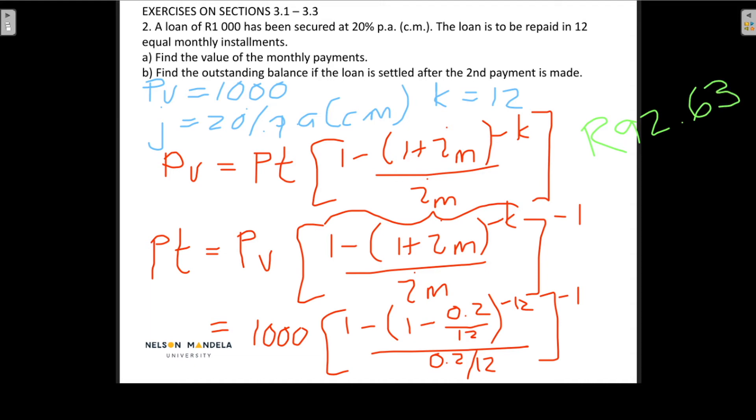So now we can look at the B part where we want to find the outstanding balance if the loan is settled after the second payment is made. I'm going to solve this making use of the retrospective method and the prospective method. Because all the payments are equal you can use either one of the two methods but I'm going to illustrate both of them again.